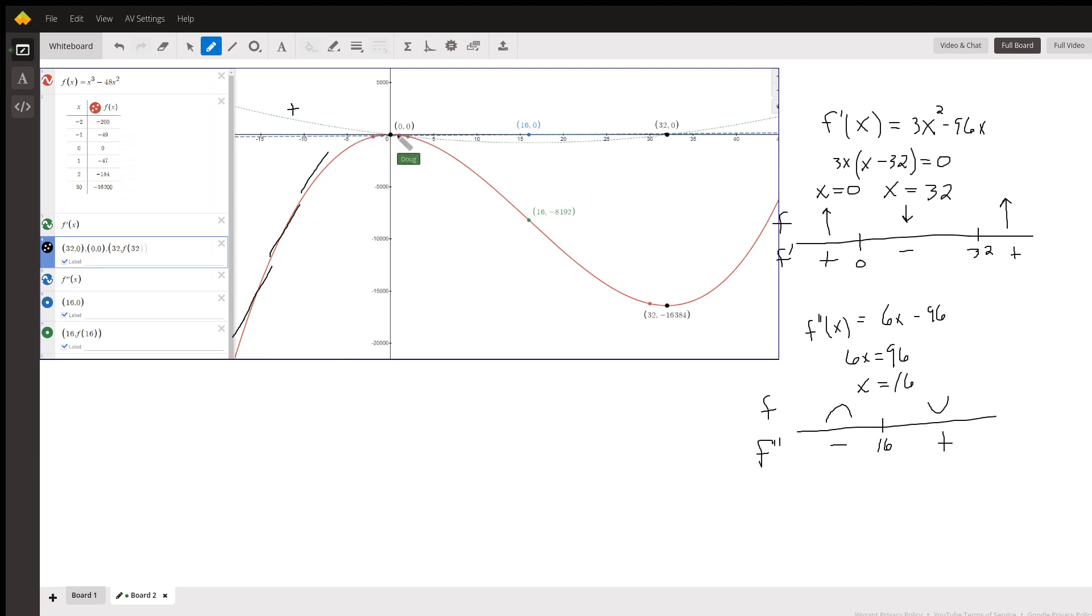And to the right of 0, the little dashed green line here is below the x-axis. So it's negative all the way out to this 32, which means the tangent lines are going downhill. And that tells you that the original function is decreasing.